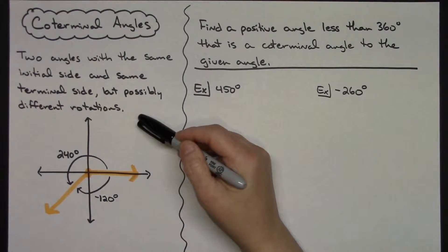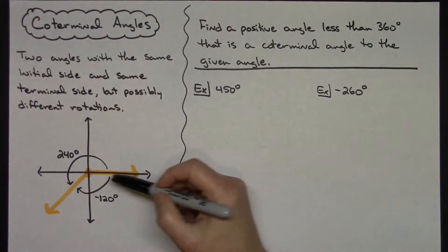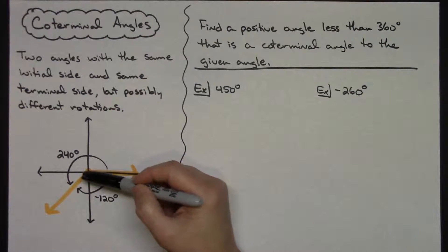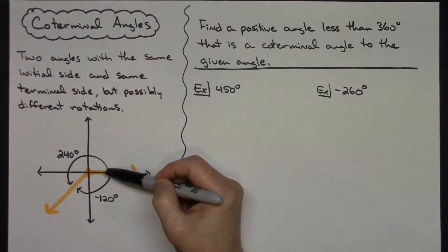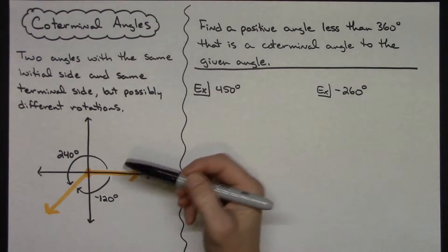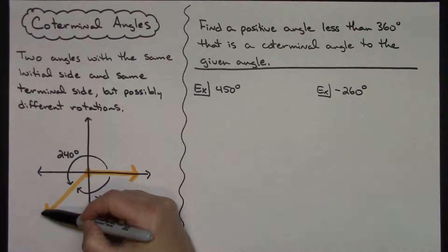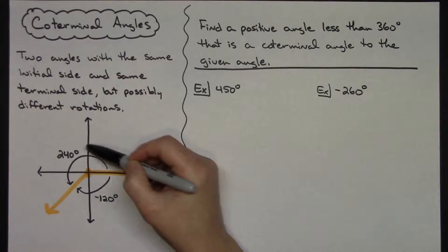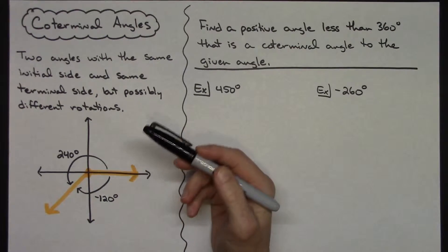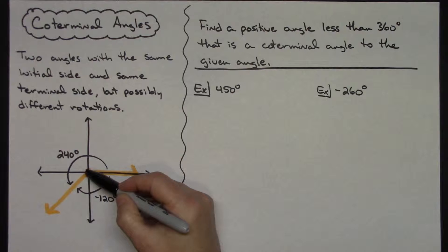As an example, just to visually see this, I have an angle drawn here. If I were to go counterclockwise around the circle, I've estimated this roughly at 240 degrees or so. This would be my initial side, this would be my terminal side — starting here, going counterclockwise, I get 240 degrees.